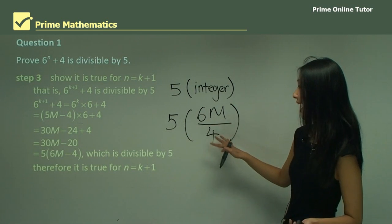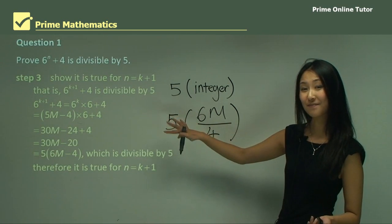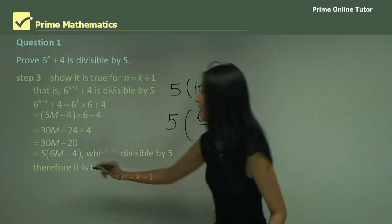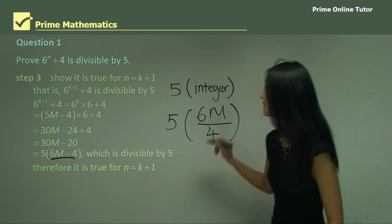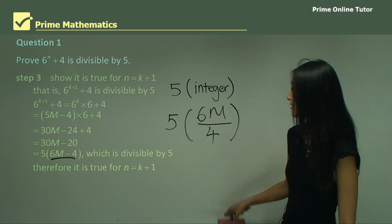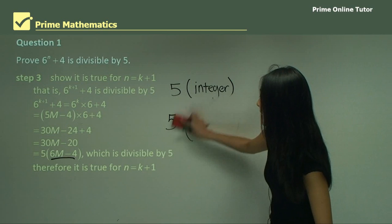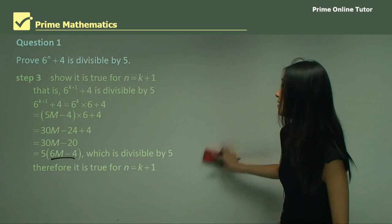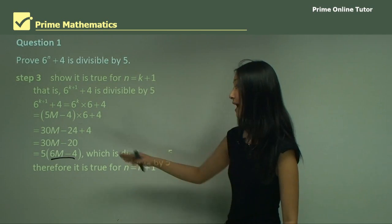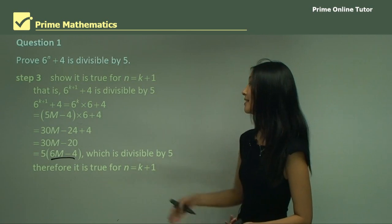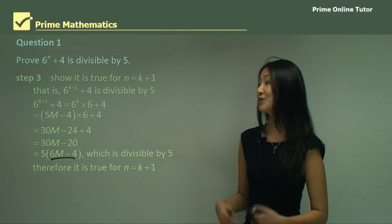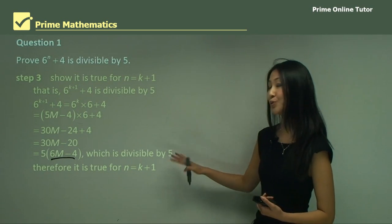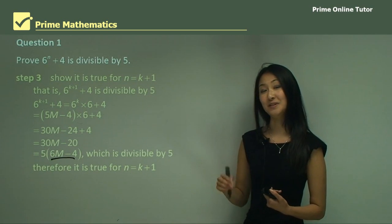Essentially what you would have is five on the outside but a non-integer inside. So remember you always have to check that what's in the bracket is definitely an integer. You can see that because it's six times m — and m was defined as an integer — minus four, with no fractions or decimal places, that must be an integer. So that's why we can say it is divisible by five and true for n equals k plus one.